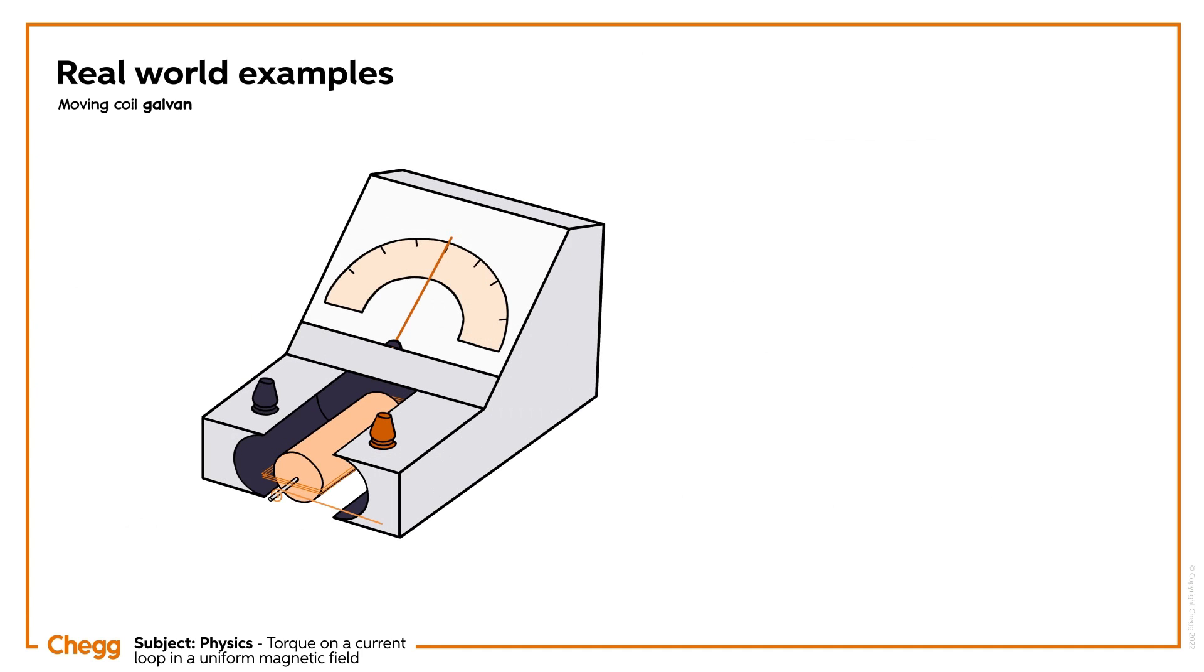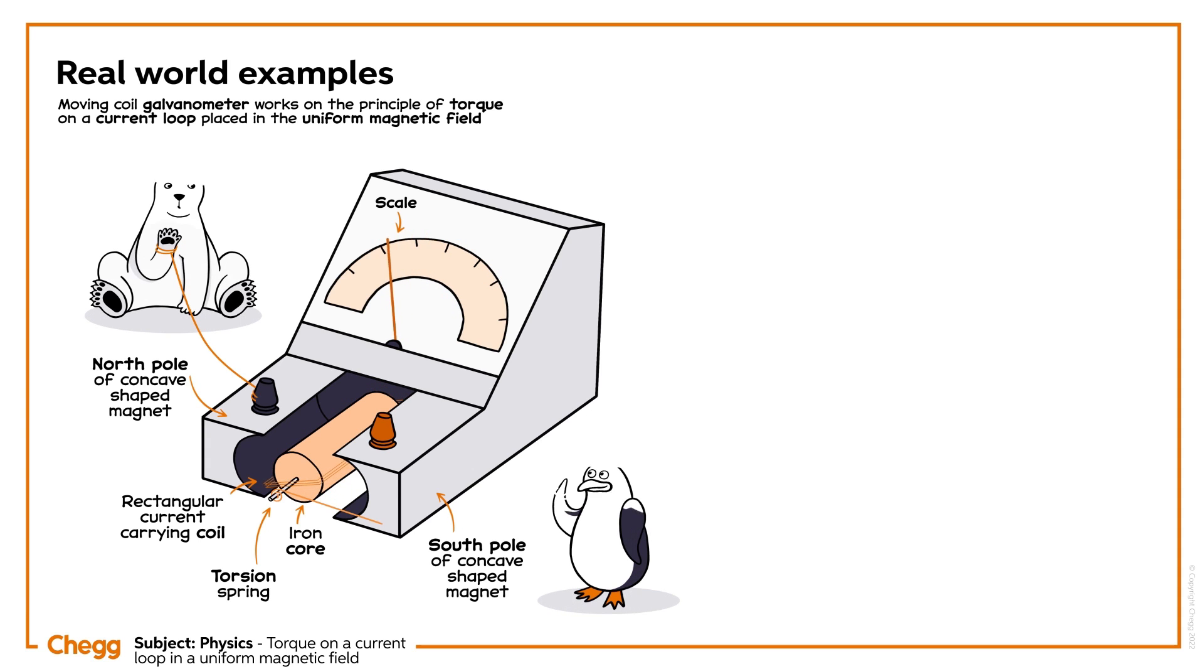Moving coil galvanometer works on the principle of torque on a current loop placed in the uniform magnetic field. In the construction of moving coil galvanometer, permanent concave shape magnets are used to provide a permanent uniform radial magnetic field, so that the plane of the loop is always parallel to the magnetic field.